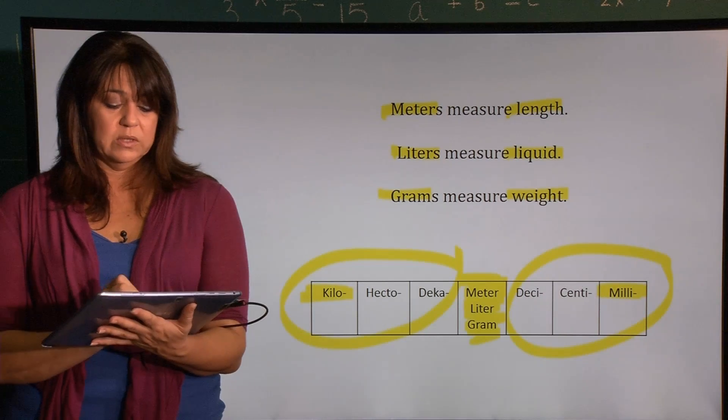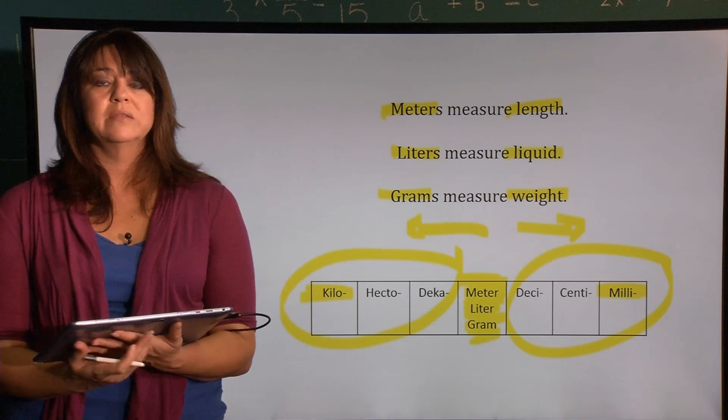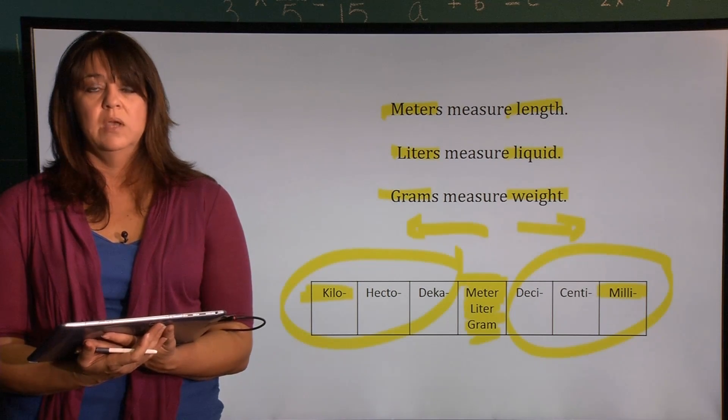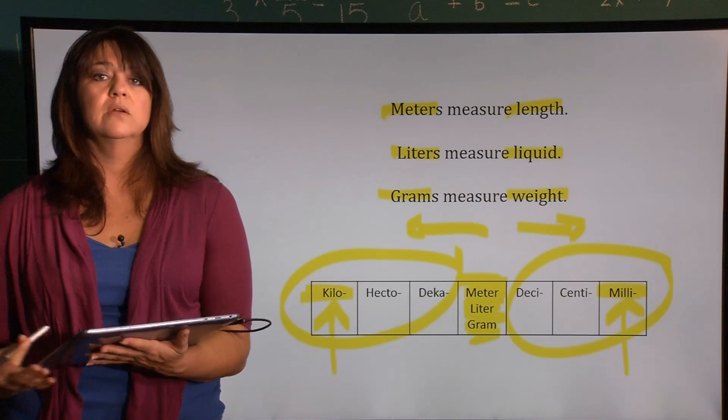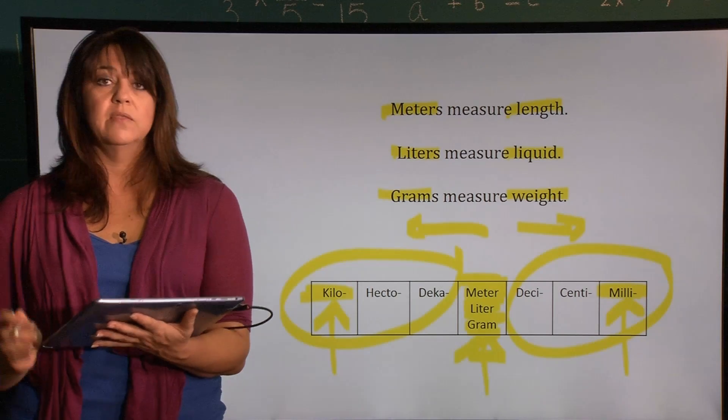These can be written either to the left or right of the base unit. So don't memorize a position and equate that with large or small amounts. Make sure you're memorizing the prefix word itself and whether or not that represents a larger or smaller amount than the base unit.